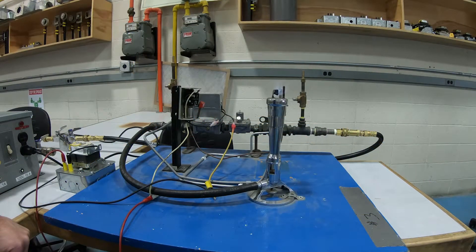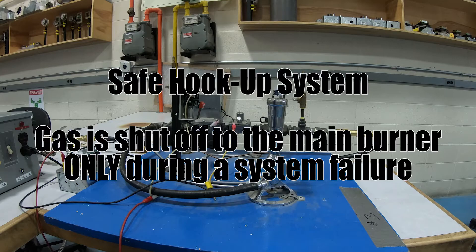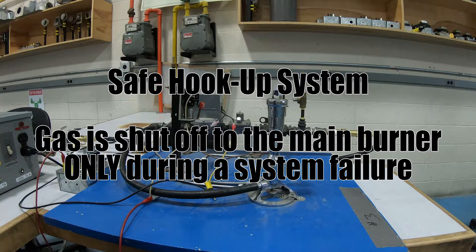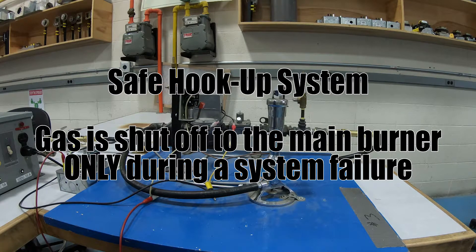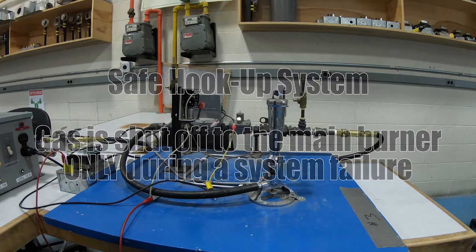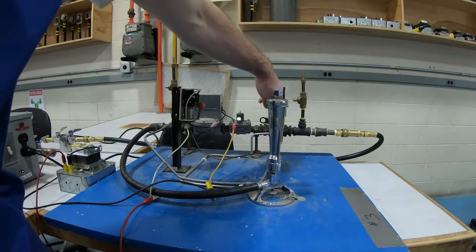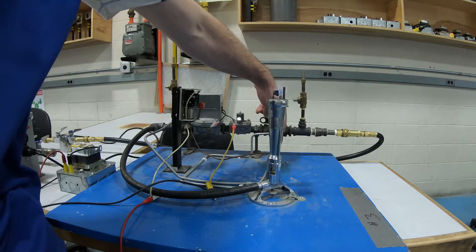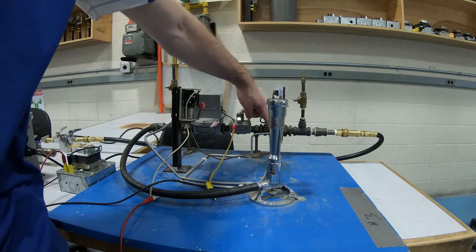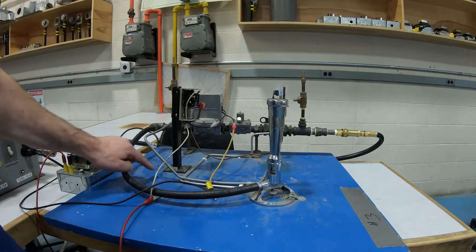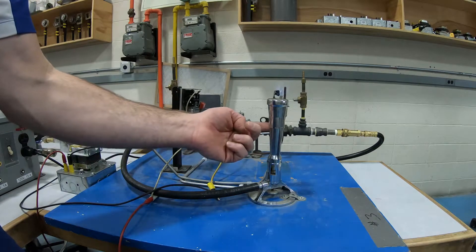Now the next type of gas train setup is like this. We call this a safe hookup. Now the reason why we don't call this 100% safe like the other one and just a safe hookup is because I have my pilot assembly or the gas going to my pilot light joined in here with a manual valve. And if you follow the pilot tubing, it just goes straight to the pilot light.